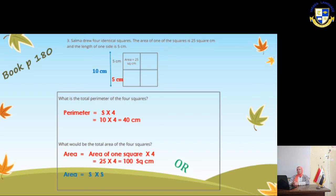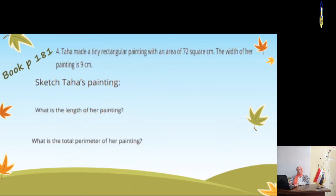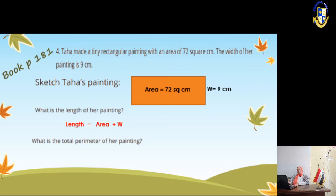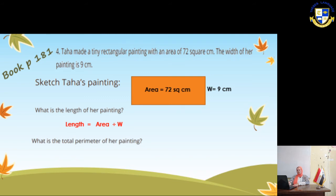Book page 181. Taha made a tiny rectangular painting with an area of 72 square cm. The width of the painting is 9. We are going to draw a rectangle with area 72 and width 9. To find the length: 72 ÷ 9 = 8 cm. The perimeter is (length + width) × 2: (9 + 8) × 2 = 17 × 2 = 34 cm.